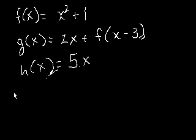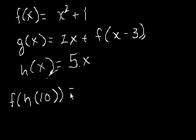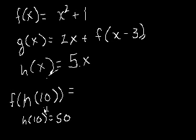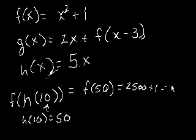What is f of h of 10? Well, first we want to figure out what h of 10 is, right? We can figure out what h of 10 is pretty easily. We take the 10, substitute it in for x. h of 10 is equal to 5 times 10, so it equals 50. So we know h of 10 equals 50, so f of h of 10 is the same thing as f of 50. And f of 50 is 50 squared plus 1. Well, 50 squared is 2,500 plus 1, which equals 2,501.